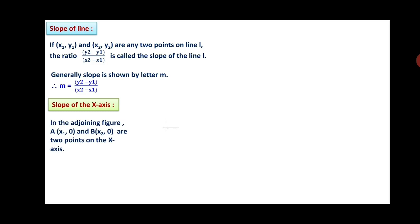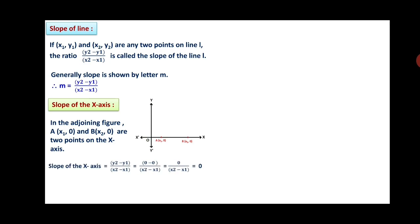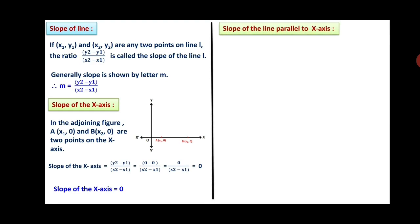Now, what is the slope of the x-axis? In the adjoining figure, A(x1, 0) and B(x2, 0) are two points on the x-axis. Therefore slope of the x-axis = (y2 − y1)/(x2 − x1) = (0 − 0)/(x2 − x1) = 0/(x2 − x1) = 0. Therefore the slope of the x-axis is 0.